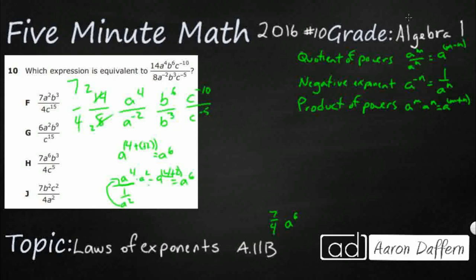This B to the sixth over B to the third, that's pretty straightforward. That's your quotient of powers. So that's going to be, and I'll write that down here, B and then your powers. Six minus three, since it's quotient of powers. So, that's going to end up being B to the third.